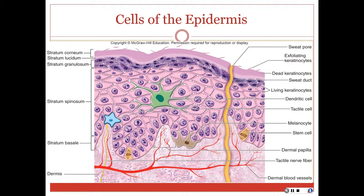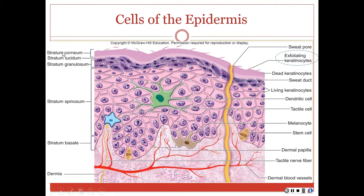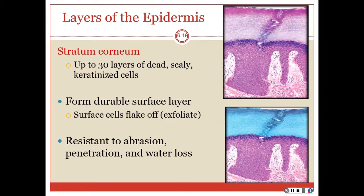The layers of the epidermis include the stratum granulosum, the stratum spinosum, and the deepest layer — the stratum basale — with the dermis beneath. There are about five layers composing the thickness of the epidermis. Going from superficial to deep, the most superficial layer is the stratum corneum.